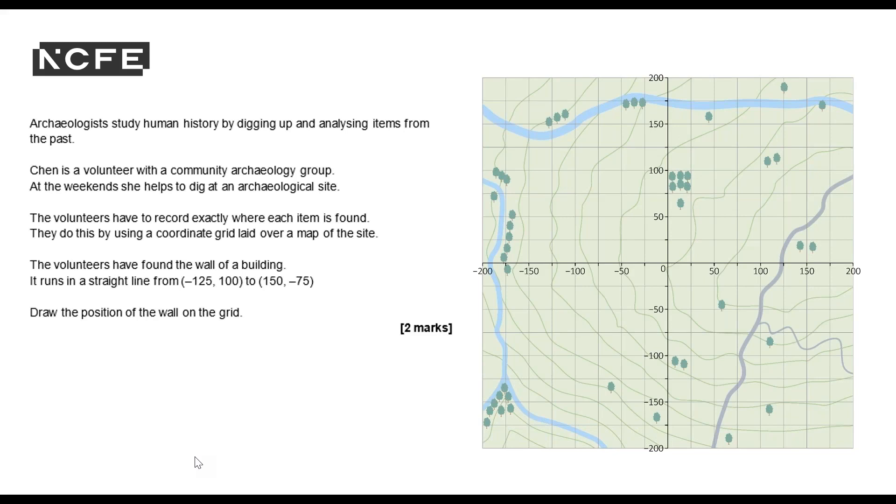Archaeologists study human history by digging up and analyzing items from the past. Chen is a volunteer with a community archaeology group. At the weekends she helps to dig at an archaeological site. The volunteers have to record exactly where each item is found. They do this by using a coordinate grid laid over a map of the site.